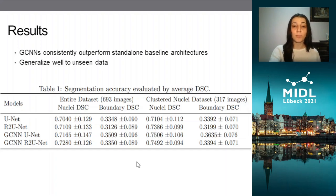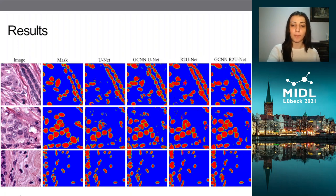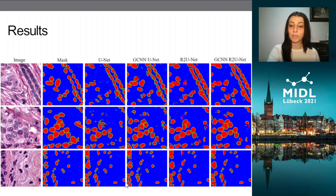Furthermore, by testing on all three different multicenter datasets, we were able to see that these models generalize well, since all three test sets had an improvement in accuracy. To visualize these improvements, let's look at some examples. We noticed the boundary segmentation improved — here's a clear example where we have two separate nuclei: the UNET considers them as a single nucleus, but the GCNN UNET is able to distinguish between the two.